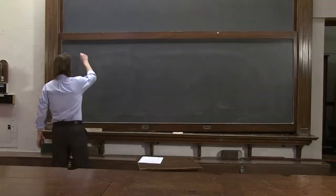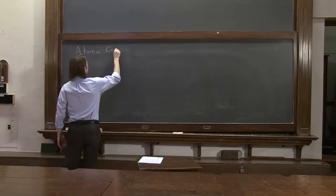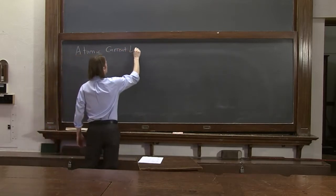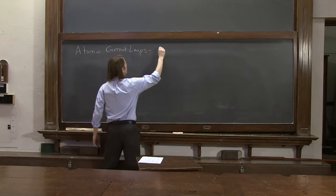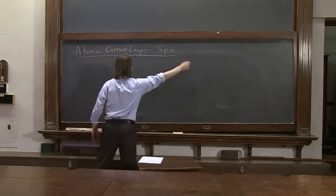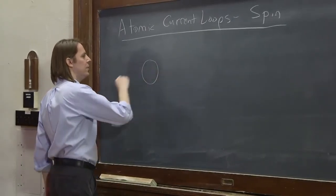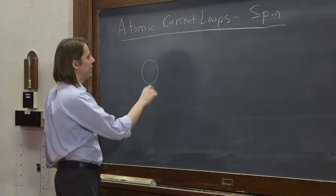There is another atomic current loop, and this one is spin. So if we're being classical, we can look at our electron. I've never drawn it that big, but let's say this is your electron.